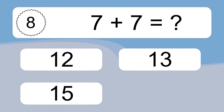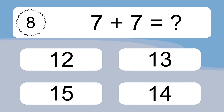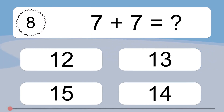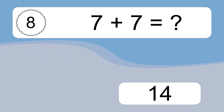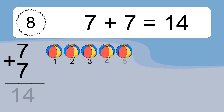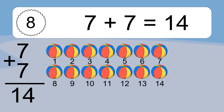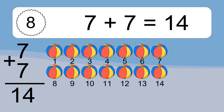7 plus 7 equals what? 7 plus 7 equals 14. Let's count it: 1, 2, 3, 4, 5, 6, 7, 8, 9, 10, 11, 12, 13, 14.